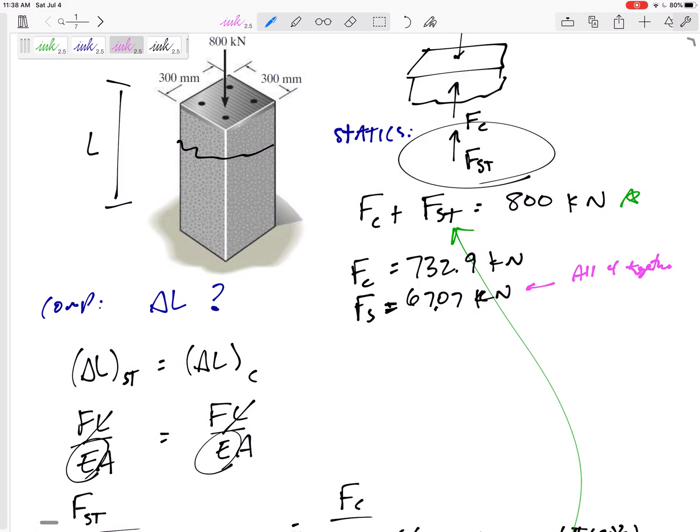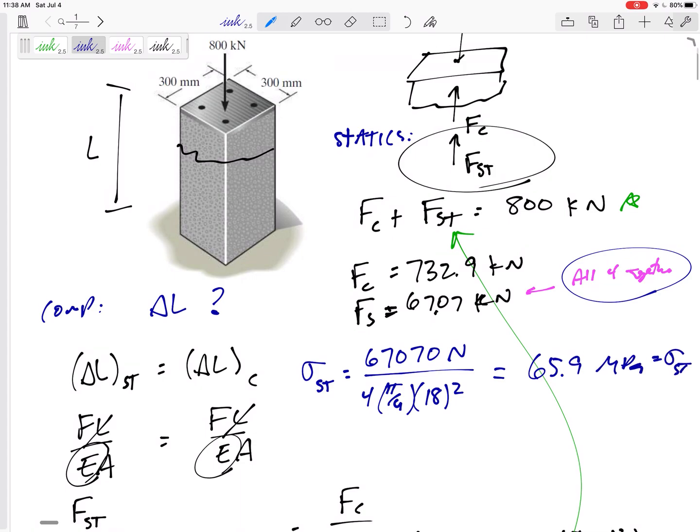I grouped all four together. If you had treated them separately, you might've gotten the force in each steel was 16.77. That's fine. Just be consistent. I grouped all four of them together. So now when I'm about to do the stress in the steel, I would take that stress, 67... Alright, so here I'm going to be a lot more careful with my units. 67,070 newtons divided by the area. I grouped all four of them together, so I needed the area of all four of them, four pi by four diameter squareds.